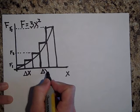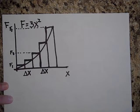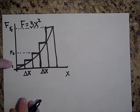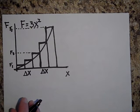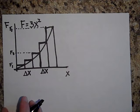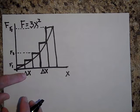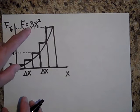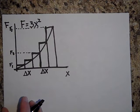So that's delta x, this is delta x, they're all delta x. But the heights are different, but that's okay because we know how the height depends on x. See, it's equal to F equals 3x squared.